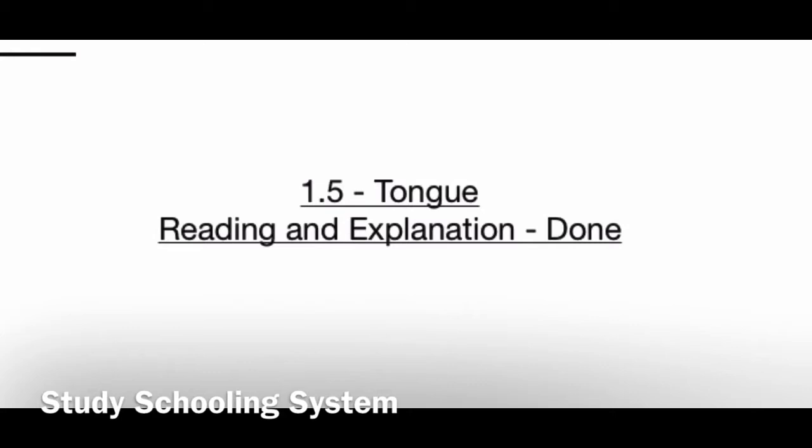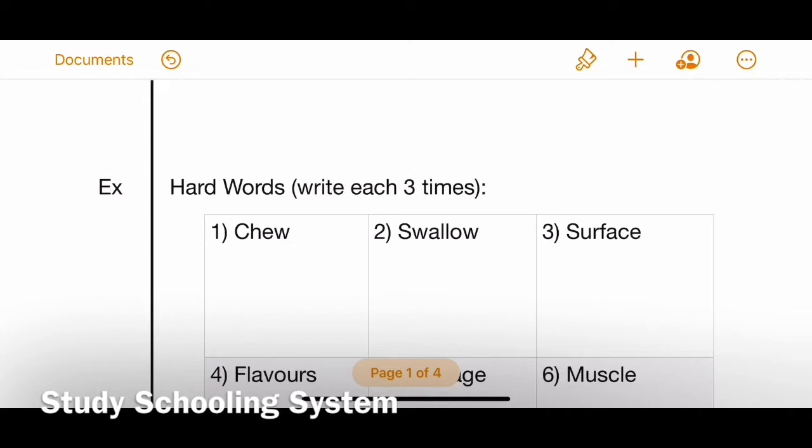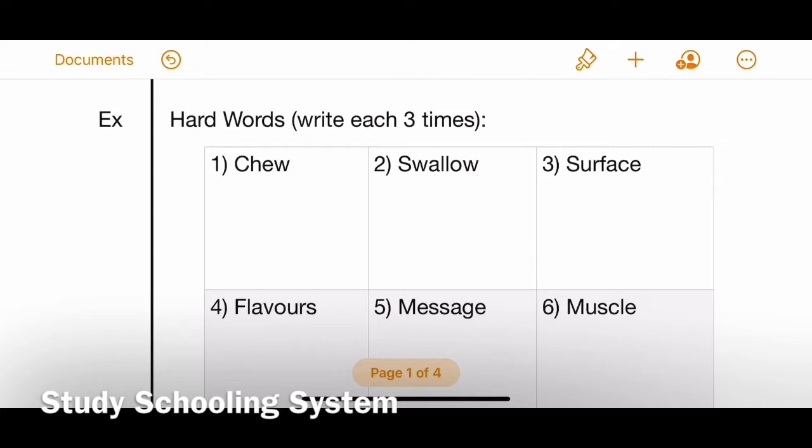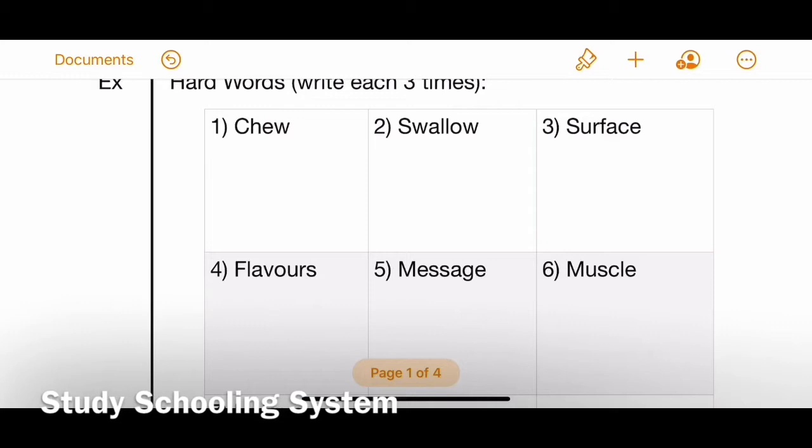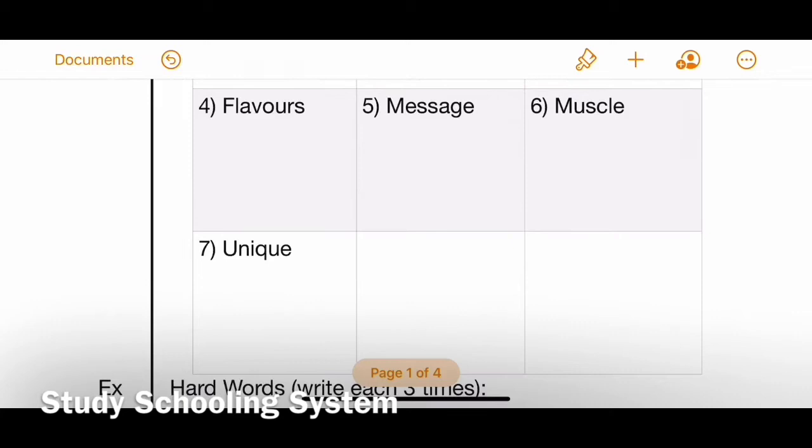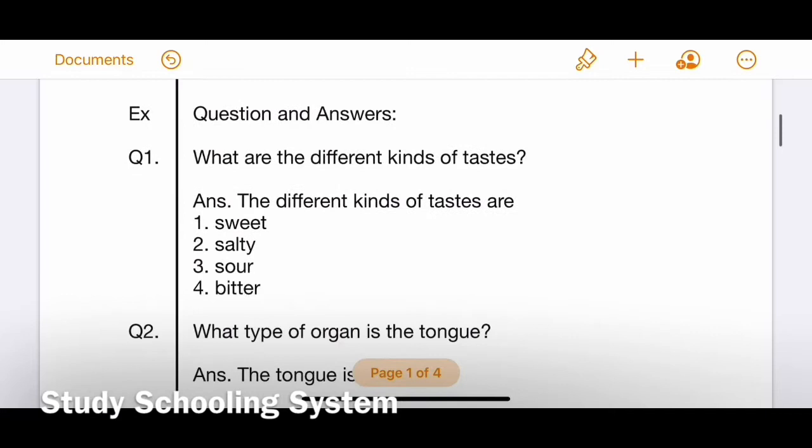Now open a new page and let's start our exercises. Number one is hard words. You write each word three times. First we have chew, number two swallow, number three surface, then flavors, message, muscle, unique.